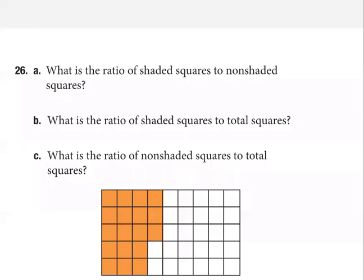Okay, so we've got — what is the ratio? We'll just start with A anyway. What's the ratio of shaded squares to non-shaded squares? So, we're simply just going to count them, and when I count the shaded squares,